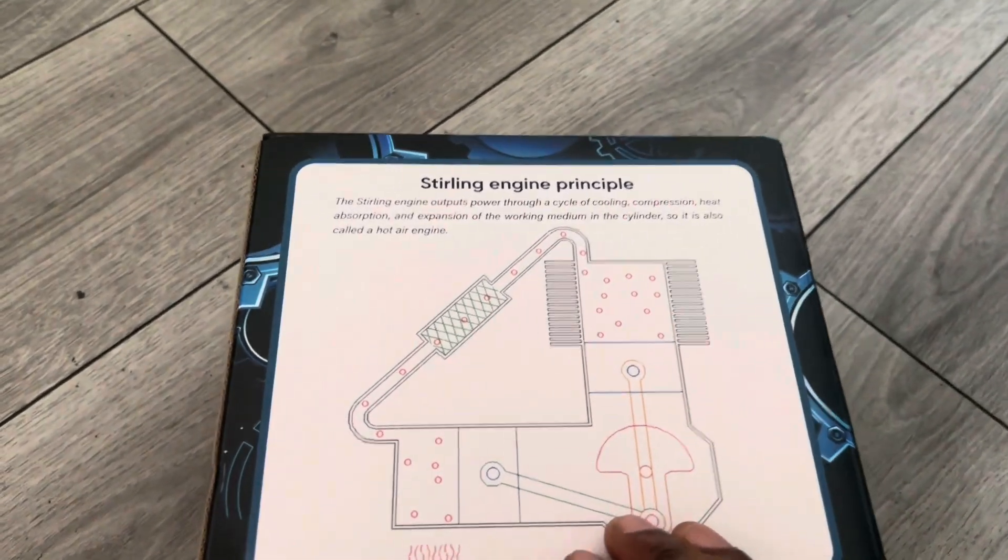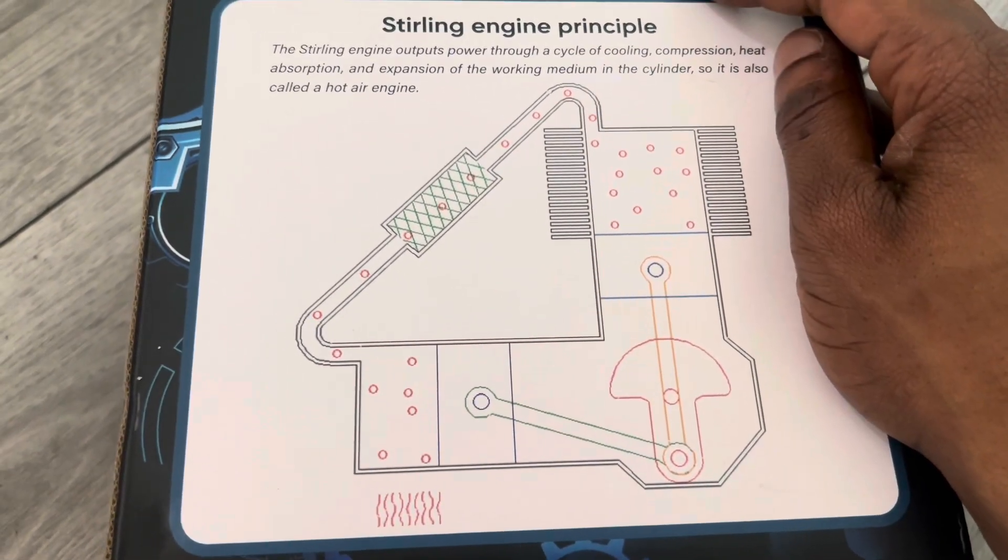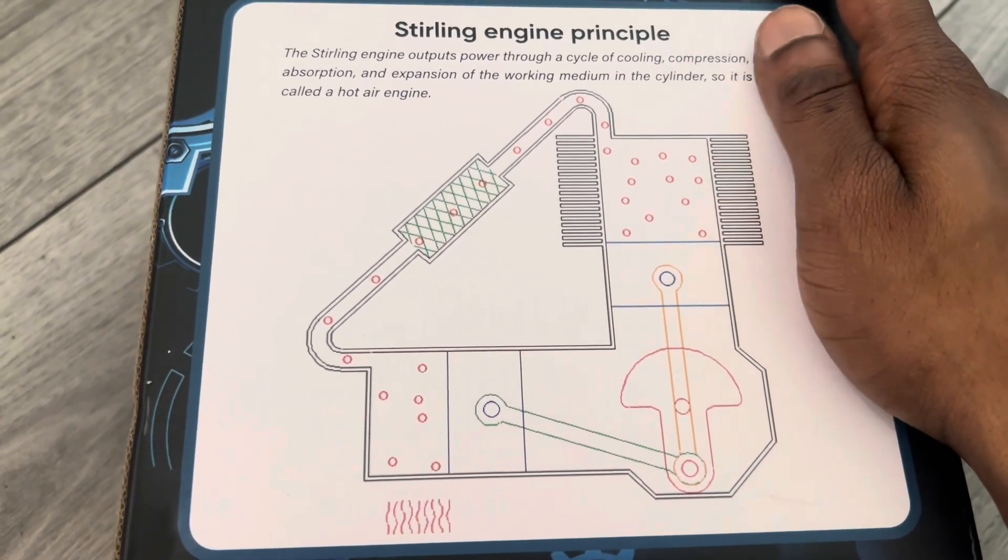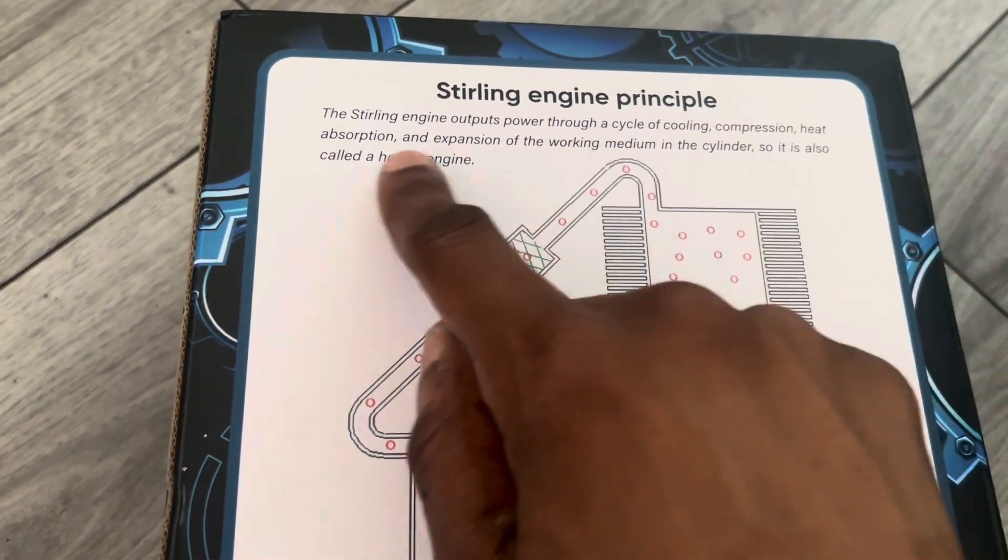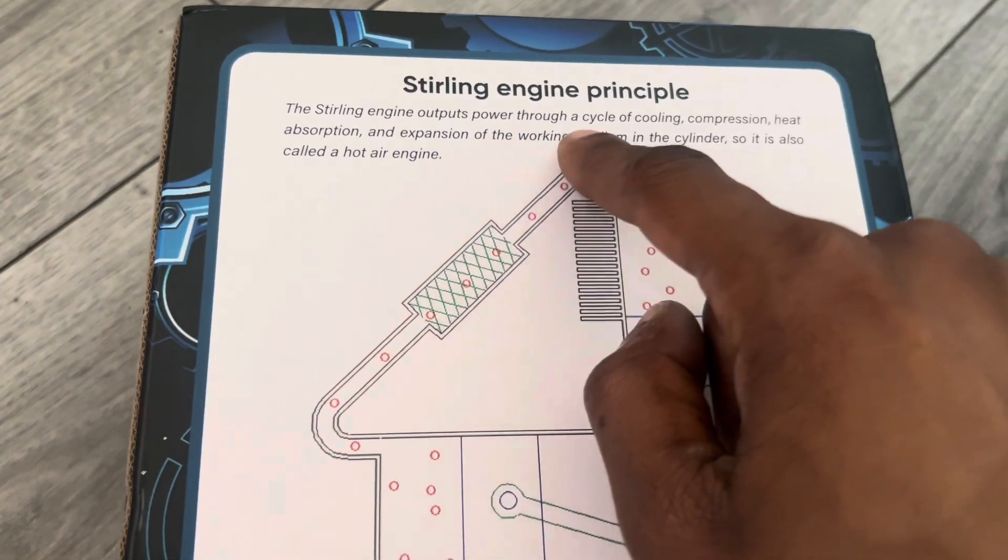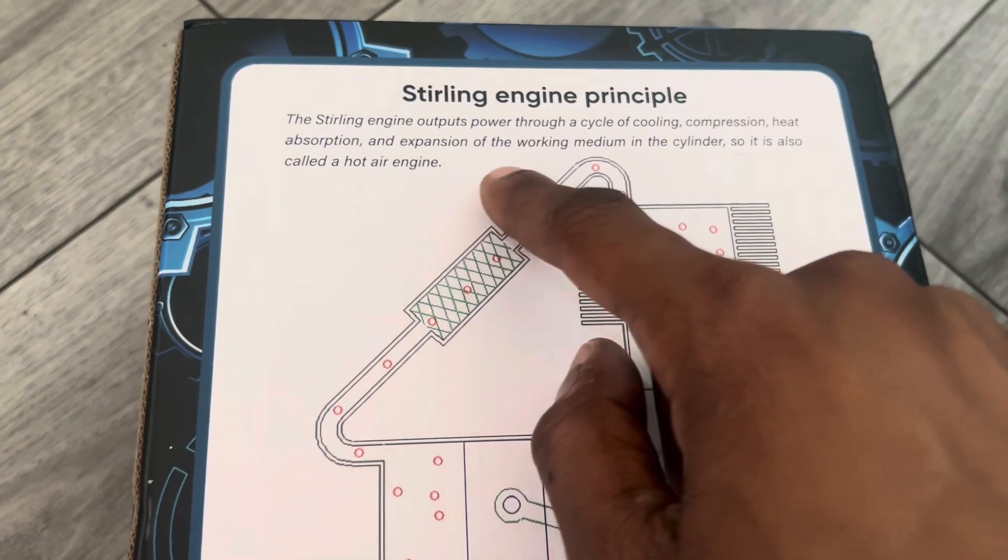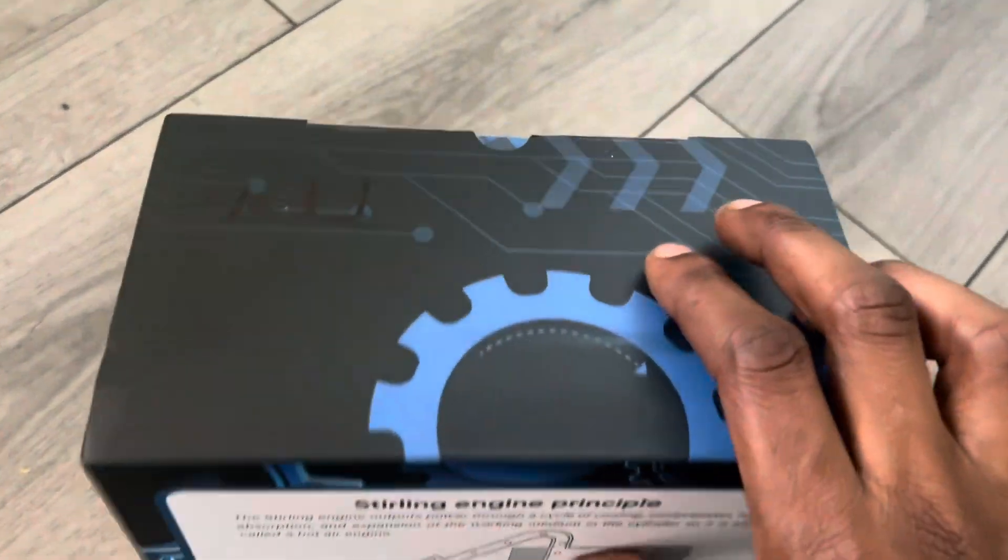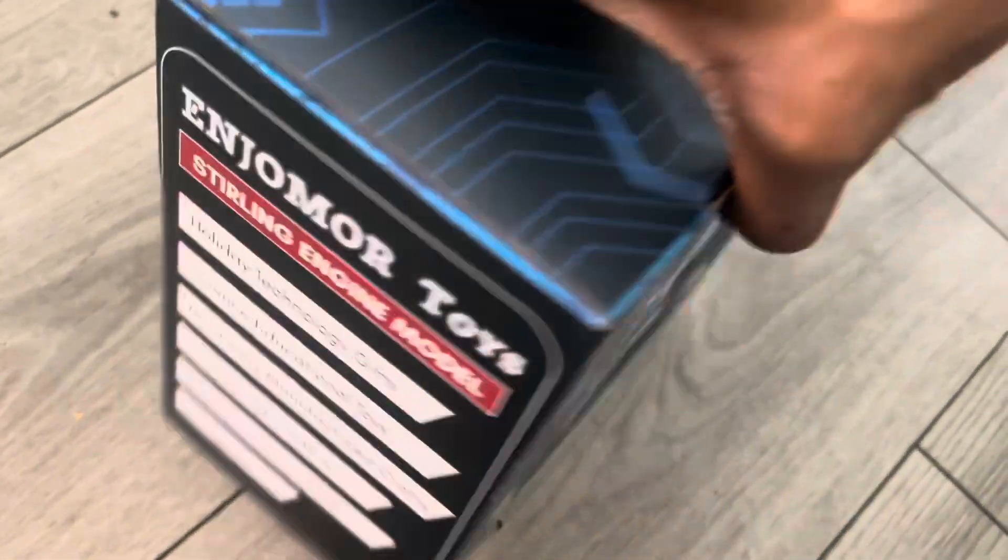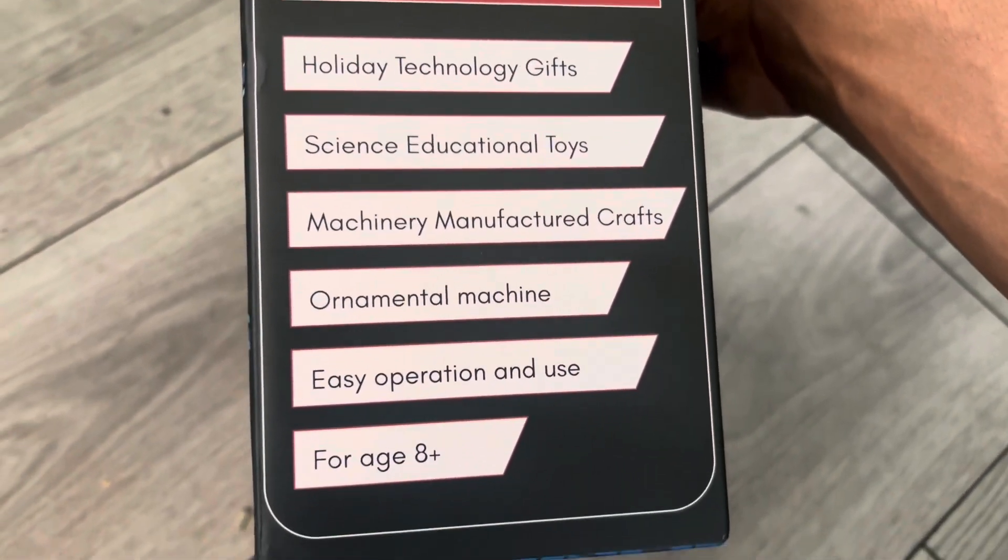But time's money and money's time, so what we have here is a Stirling engine from the looks of the box. As it says, the Stirling engine principle: the Stirling engine outputs power through a cycle of cooling, compression, heat absorption, and expansion of the working medium. So I've already explained that in my previous videos. This is what it says here: holiday technology gifts, science education. So it's for all fans who are fans of mechanical gifts.